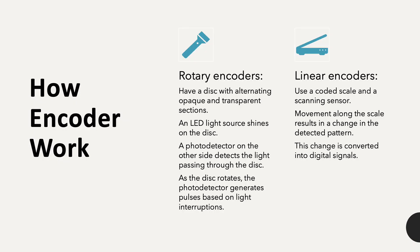Let's take a closer look at a rotary encoder. A disc with alternating opaque and transparent sections is attached to the rotating shaft. An LED source shines on the disc, and on the other side a photodetector is positioned to detect the light passing through. As the disc rotates, the opaque sections interrupt the light, causing the photodetector to generate electrical impulses.